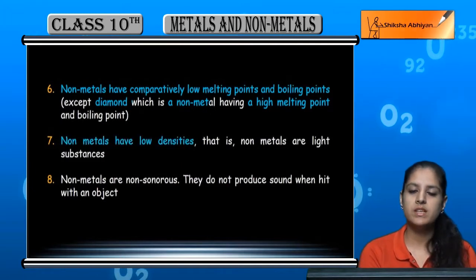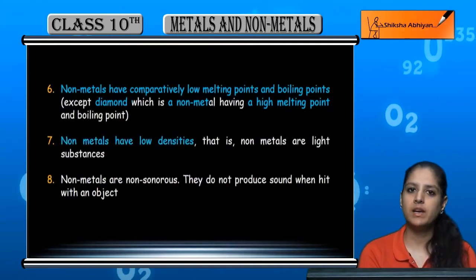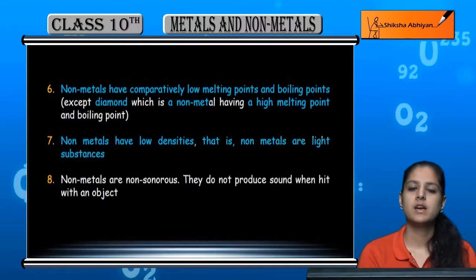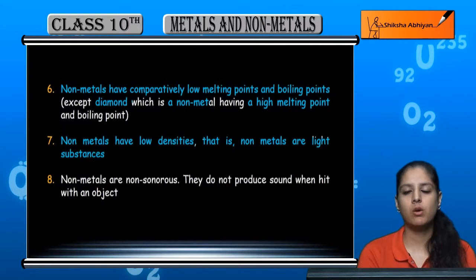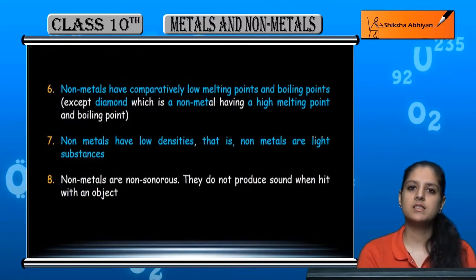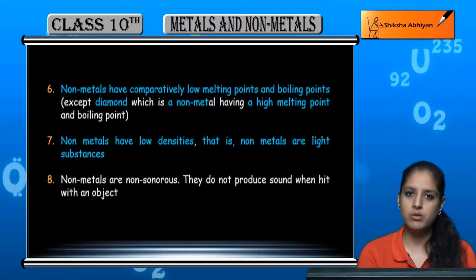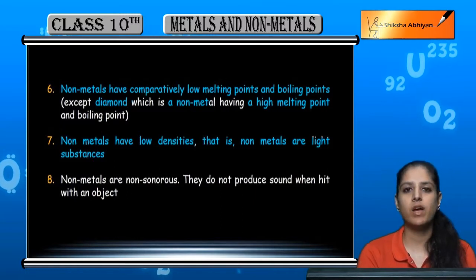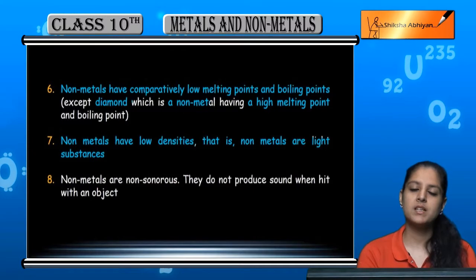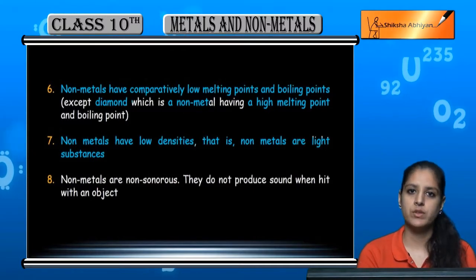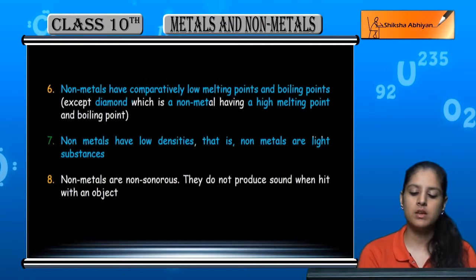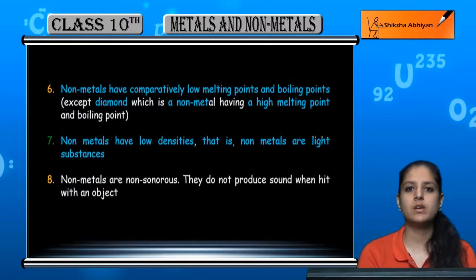Next is low density, which means non-metals are light substances. Density means heaviness — more density means heavier, less density means lighter. Metals have high density so they are heavy, but non-metals have low density so they are light.